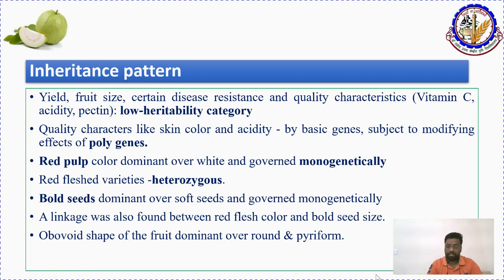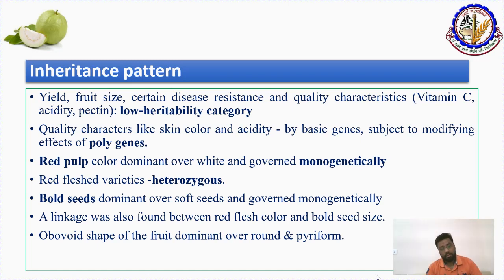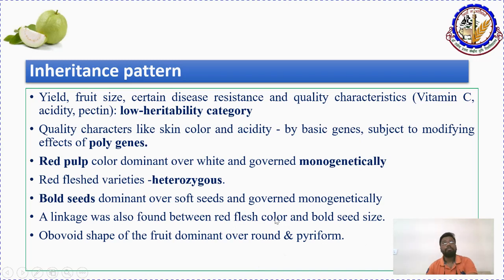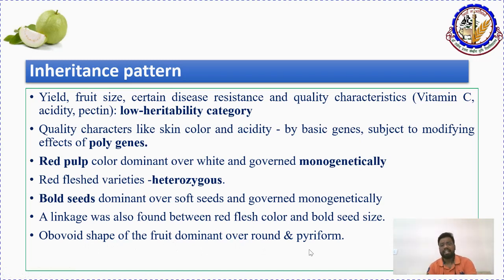It is difficult to develop pink-colored guava varieties with soft seeds because there is a linkage between red flesh color and bold seed size. The flesh color of guava is red or pink because of the presence of pigments like lycopene. Obovate fruit shape is dominant over round. These are some inheritance patterns, but the inheritance of many traits in guava still needs to be properly studied.